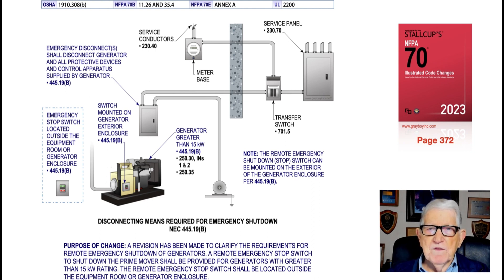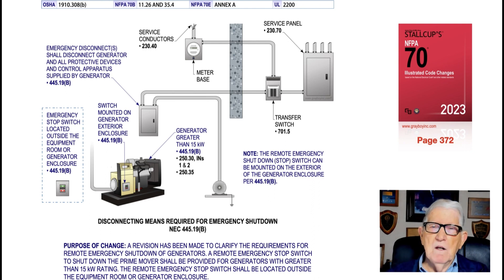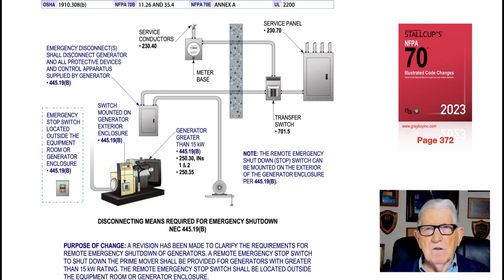When the generator has a rating greater than 15 kW, notice the arrow in the illustration pointing to the generator indicating it is greater than 15 kW. Key references to review include 445.19(B), 250.30 Informational Notes 1 and 2, and 250.35 when dealing with a permanently installed generator. The notes and call-outs in blue help you get a better handle on this type of installation.